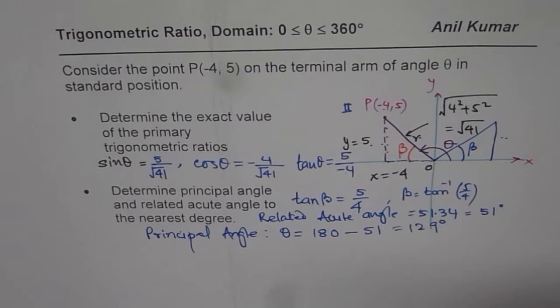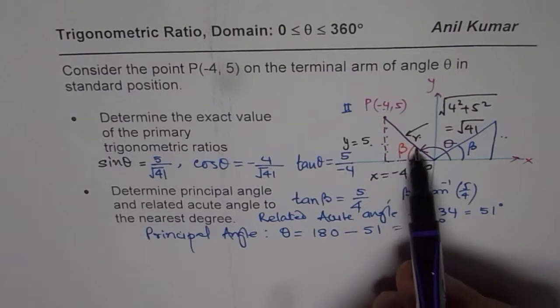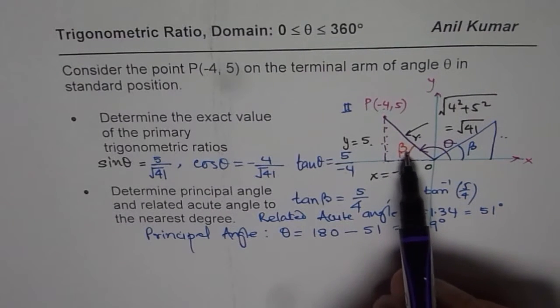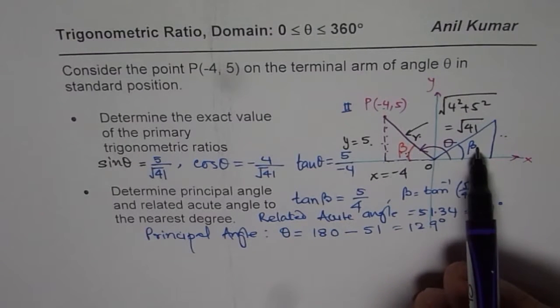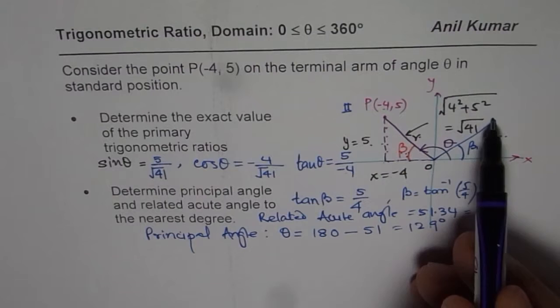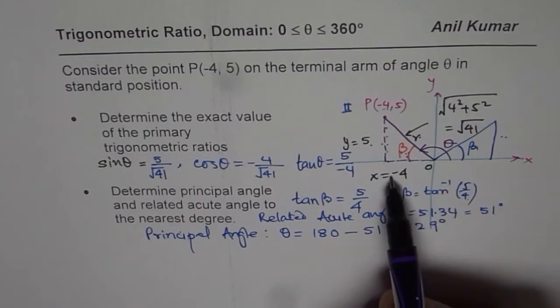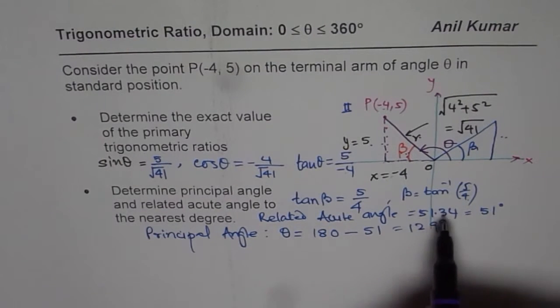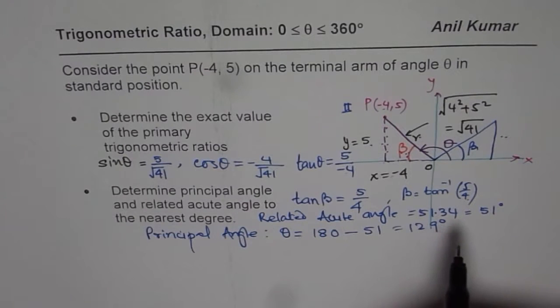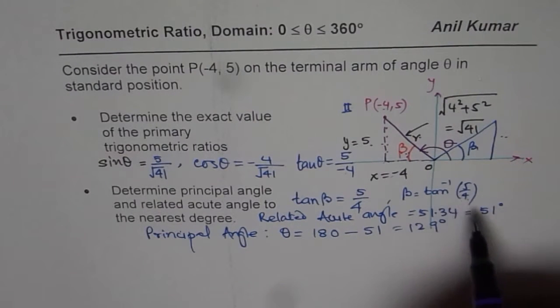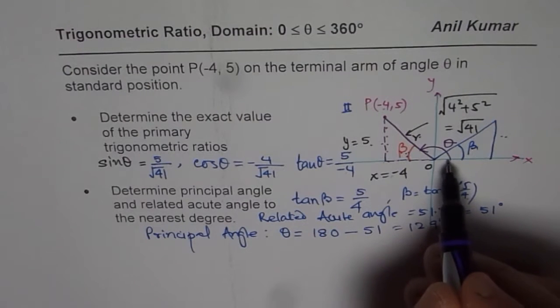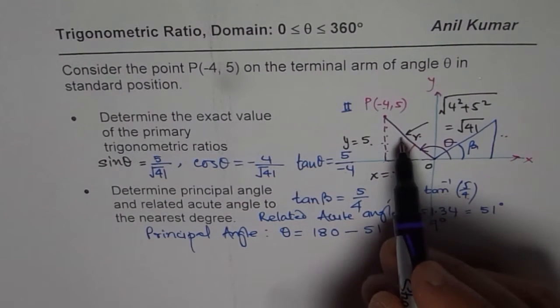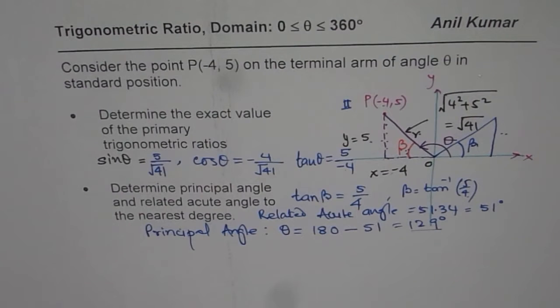Really speaking, the acute angle is the angle which terminal arm makes with the horizontal axis and it is always considered positive. When you are finding the value of the acute angle, imagine that this angle is in quadrant 1. That is why we have calculated with 5 and 4 values, not with minus 4. I hope you understand and appreciate that part. The relative acute angle is always positive, whereas principal angle is also positive but could be anywhere between 0 to 360 degrees. In this case, it is 129 degrees, signifying that our terminal arm is in quadrant 2. I hope that helps. Thank you.